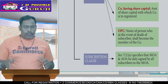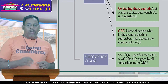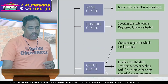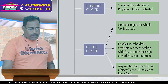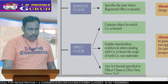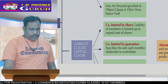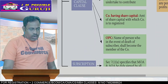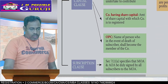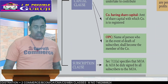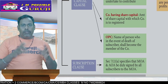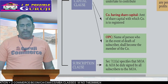So these are the clauses of MOA: first, Name clause; Domicile clause; Object clause; Liability clause; and Subscription clause — all applicable to all companies.